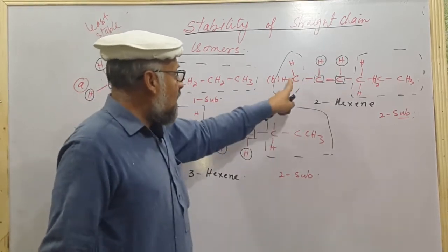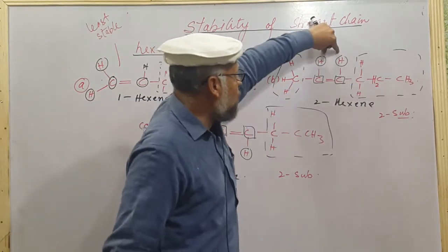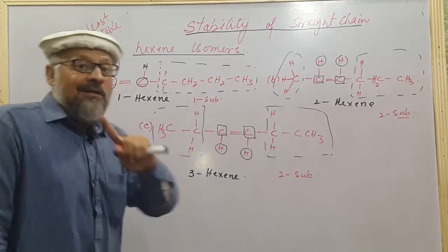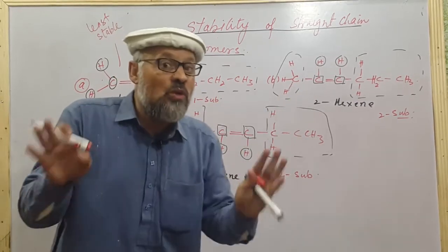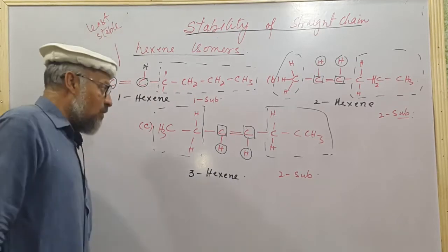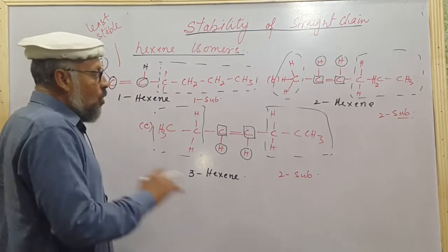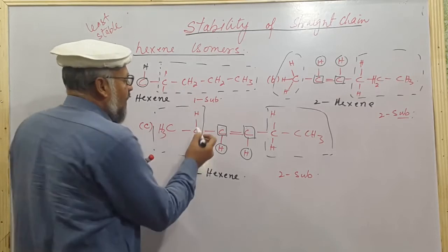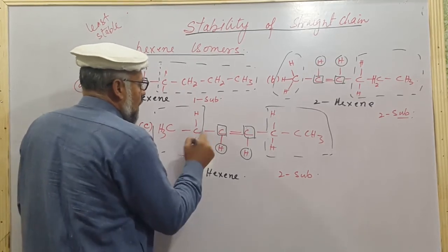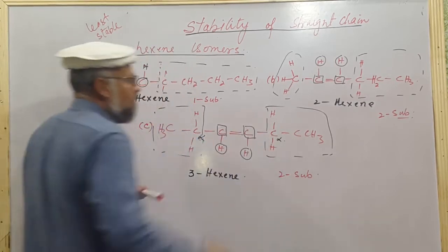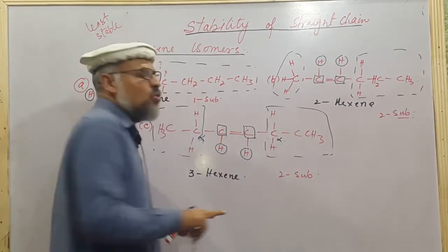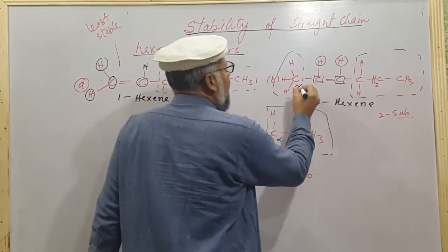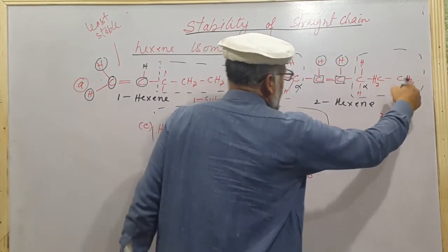For hex-2-ene and hex-3-ene, both have one substituent on each side of the double bond with two hydrogens — so the substituent count is the same. When substituents are equal, we need another rule. We look at the alpha carbons and alpha hydrogens. The alpha carbon is the carbon adjacent to the double bond. We are not concerned with beta or gamma carbons, only the alpha carbons.